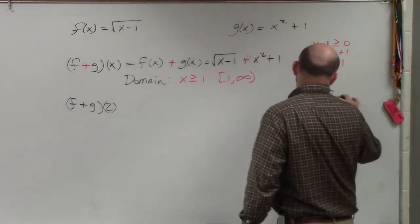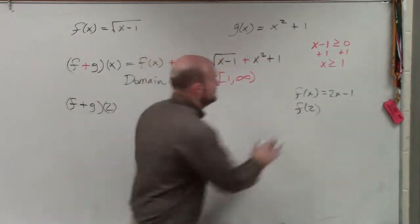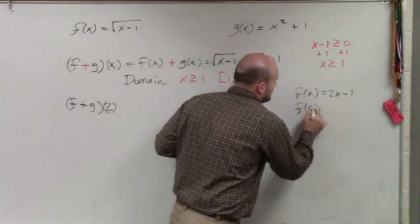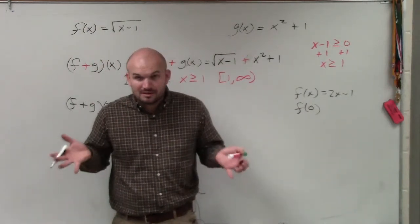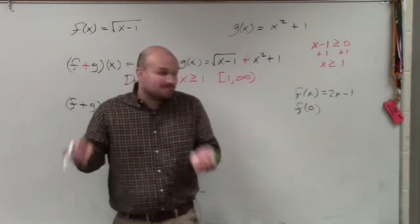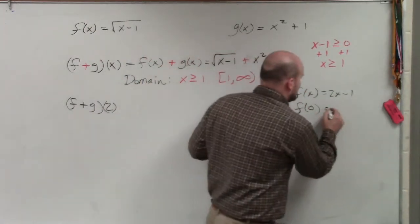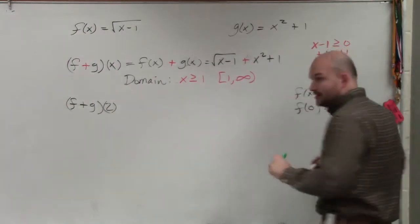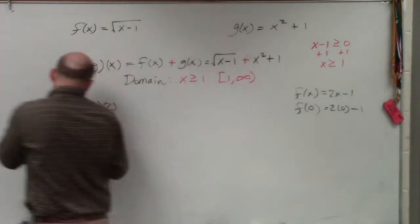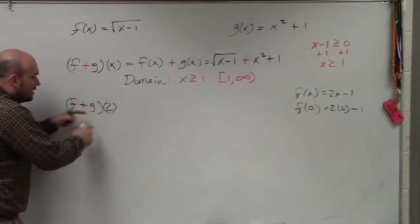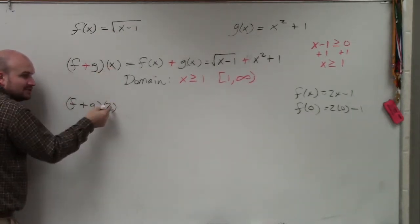If I had f(x) equals 2x minus 1, right? If I said what was f(2), where would you put the 2? Let's do f(0). If I said f(0), where would you put the 0? At the x. In for x, right? You replace your input value x with 0. So it would be 2 times 0 minus 1, right? So here it's saying (f + g)(2). I want you to add the functions. And then instead of using x, I want you to use 2.